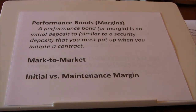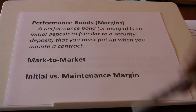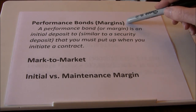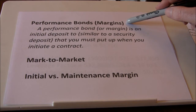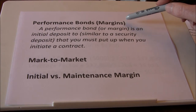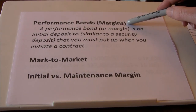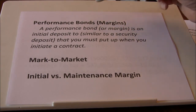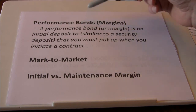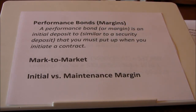A few key terms when talking about futures. One of the first is performance bonds, sometimes referred to as margins. More often you'll hear people refer to them as margin contracts, though the exchanges tend to call them performance bonds. A performance bond or margin is an initial deposit, similar to a security deposit, that you must put up when you initiate a contract.